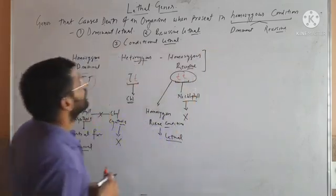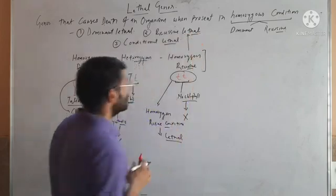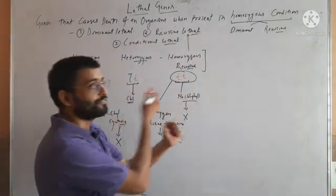In this case, it will be called recessive lethal. Now, reversing this case — if the recessive gene small t is involved in chlorophyll synthesis, then small t is present in tt and Tt genotypes. But in the TT genotype, there is no small t, so no chlorophyll synthesis occurs and it will die. Therefore, the dominant allele becomes lethal, and this is called dominant lethal.